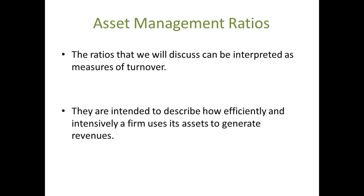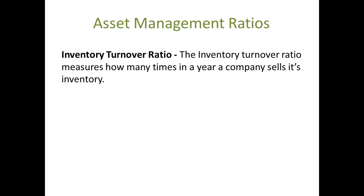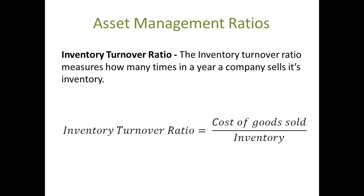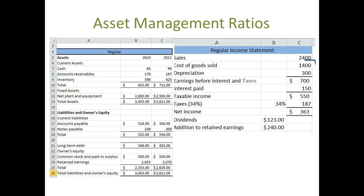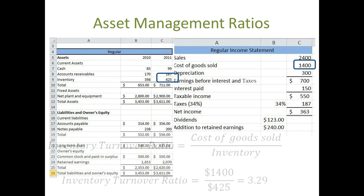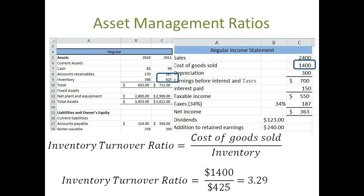The Inventory Turnover Ratio measures how many times in a year a company sells its inventory. It is calculated as Cost of Goods Sold divided by Inventory. In our example, our Cost of Goods Sold is $1.4 million and we have $425,000 in inventory. Therefore, our Inventory Turnover Ratio is 3.29.